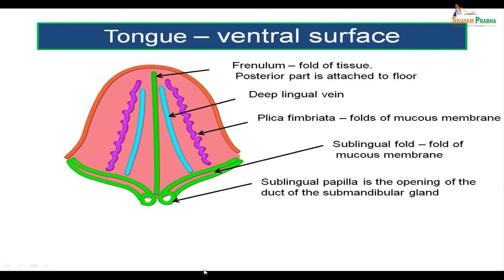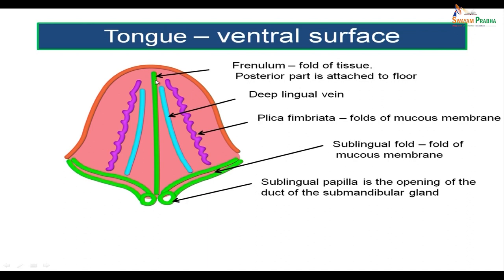Now let us look at the ventral surface of the tongue — if you lift the tongue upwards, this is what you will see. The midline shows a fold of tissue called the frenulum. The posterior part of the frenulum is attached to the floor of the mouth, while the anterior portions are free. The deep lingual vein is present lateral to the frenulum, and the mucous membrane is so thin that the darkish blue discoloration of the lingual veins is seen on either side of the frenulum. Further laterally, there is a fold of mucous membrane called plica fimbriata.